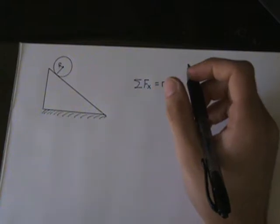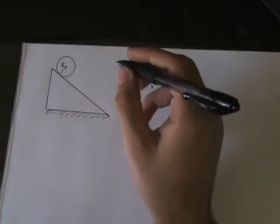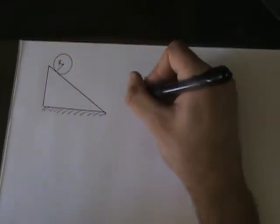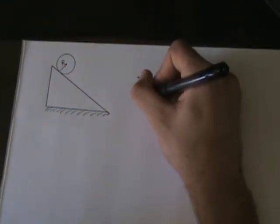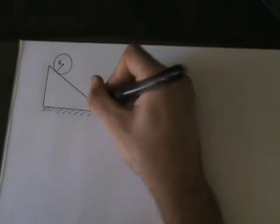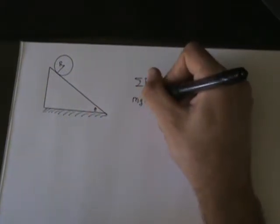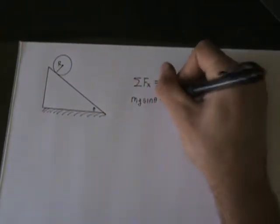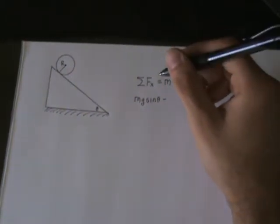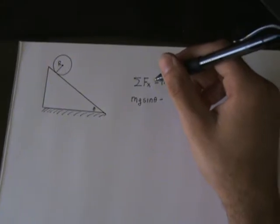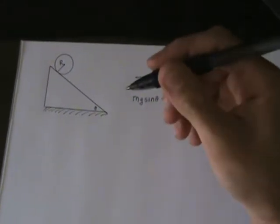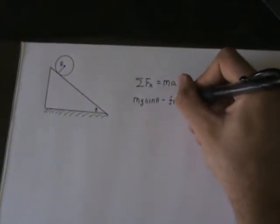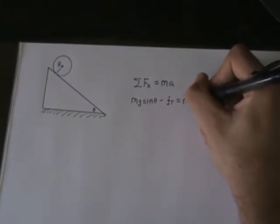I don't want to concentrate too much on resolving forces into components, but if we were to do that, the weight of the object would be given by mg. There's an angle right here, theta, mg sine theta of the incline, minus, now since it's rolling there has to be a force of friction because friction is causing it to roll down, minus the force of friction is equal to mass times acceleration.